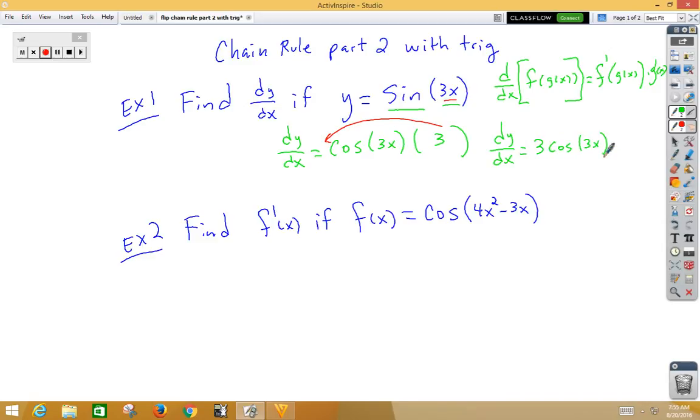In our second example, this time our inside function is 4x squared minus 3x. Our outside function is cosine. So f prime of x would be equal to,